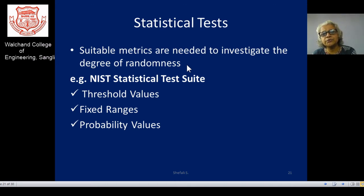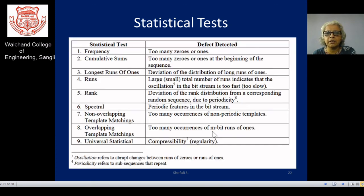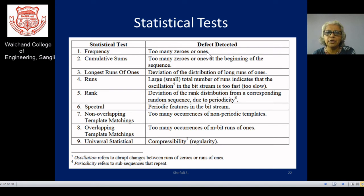For checking randomness, there are tests suggested by NIST including thresholds and fixed ranges. If any frequency of your key or data has too many zeros or too many ones, it is not advisable as a good key. You need a certain balanced frequency of zeros and ones. Some cumulative sum tests check whether too many zeros or ones appear at the beginning or inside the data — if skewness exists in the distribution, it is not advisable.